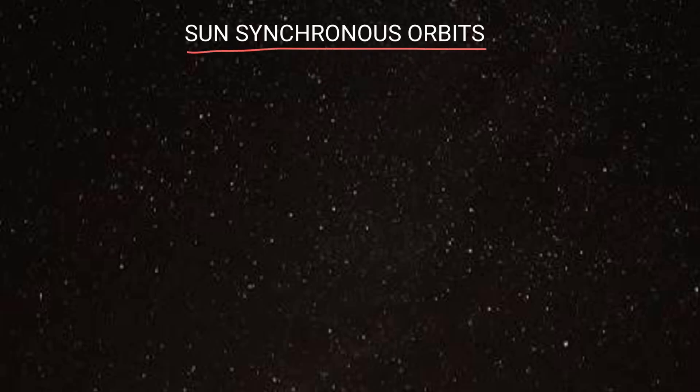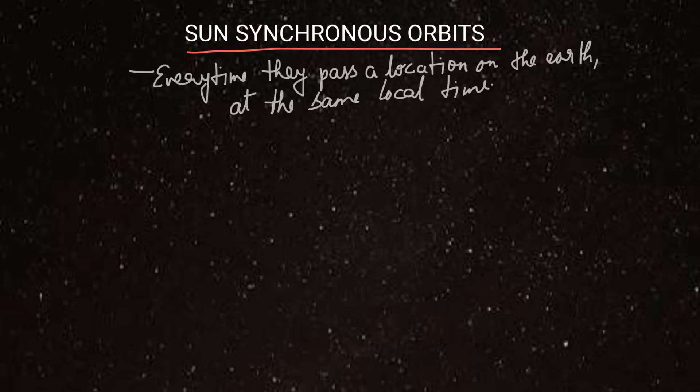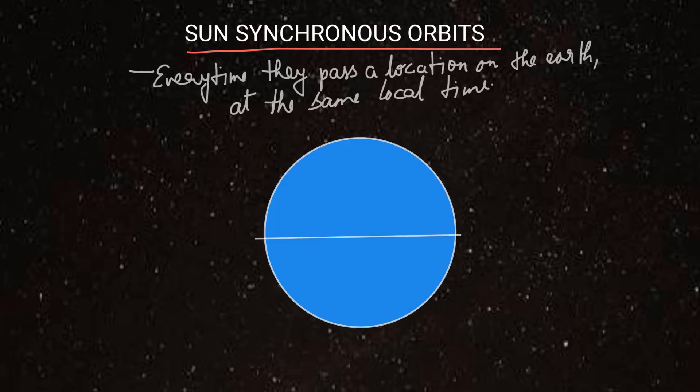In sun-synchronous orbits, the satellites are placed such that whenever they cross a particular location on the earth, at that point the same local solar time occurs. Let me explain. This is earth, in sun-synchronous orbit our satellite moves something like this. Then in the second round, it will again go like this and come here. Third round, it will again cover such a trajectory and come over here.